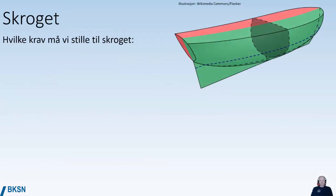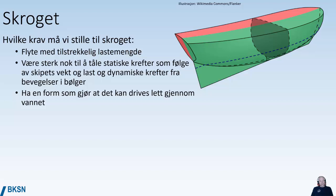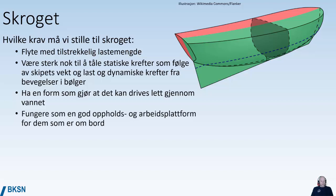The hull needs to meet several different requirements. First of all, it has to have enough buoyancy to take care of whatever cargo or weight we put inside the hull. It has to be strong enough to withstand the static forces due to the weight of the ship and the dynamic forces from the movement in waves, sea, and weather. It also needs to have a shape that makes it possible to drive the hull through the water with as little force as possible, and it needs to act as a good working platform for the people and the cargo on board.